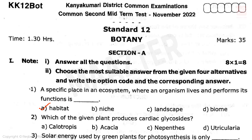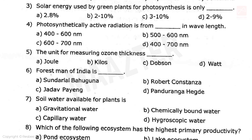Second question: which of the given plants produces cardiac glycosides? The correct answer is option A: Calotropis. Third question: solar energy used by green plants for photosynthesis is only option B: 2 to 10 percent. Fourth question: photosynthetically active radiation is from dash in wavelength — option D: 400 to 700 nanometers.